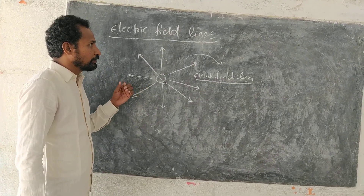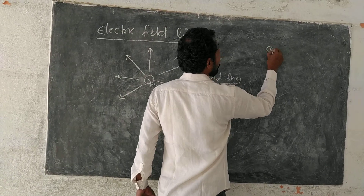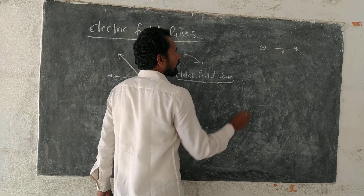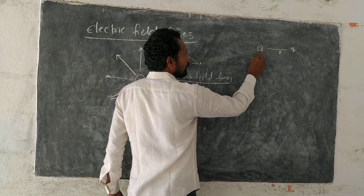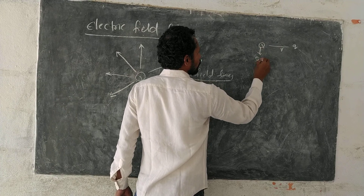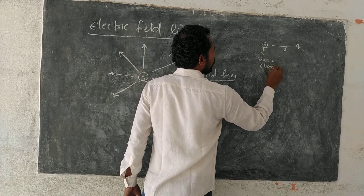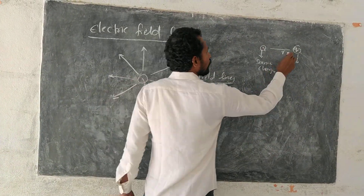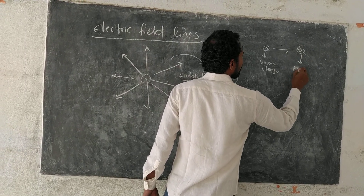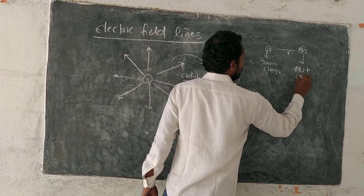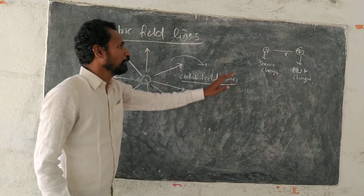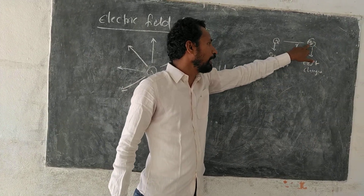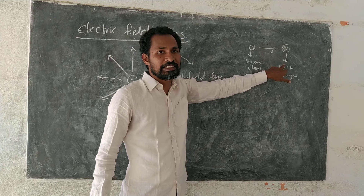In the last class I mentioned capital Q and small q, and distance is r. Capital Q, which is developing the field, we call it the source charge. Small q, which is testing whether an electric field is present or not, we call it the test charge. So capital Q is the source charge which develops the field, and small q is the test charge.